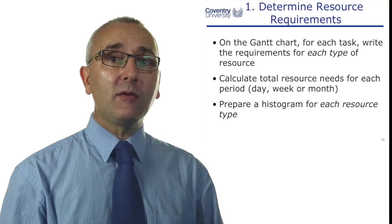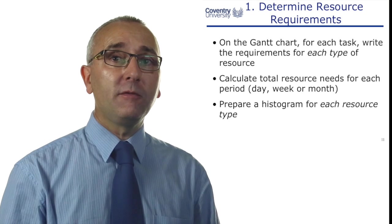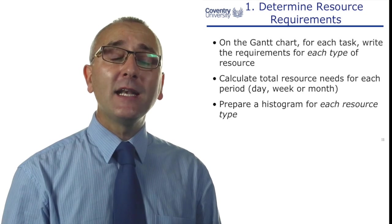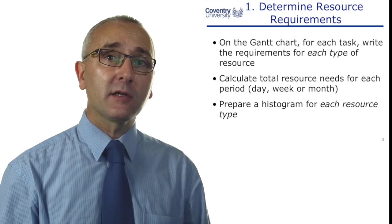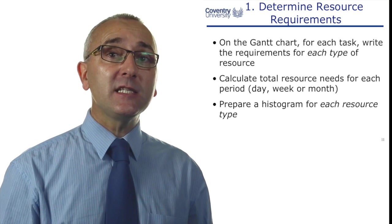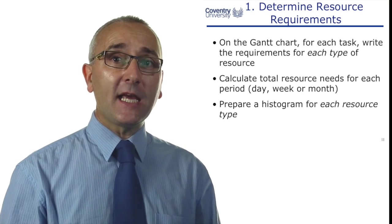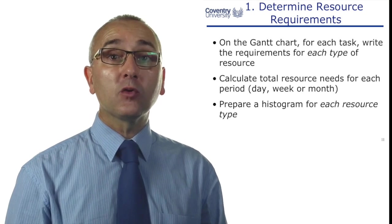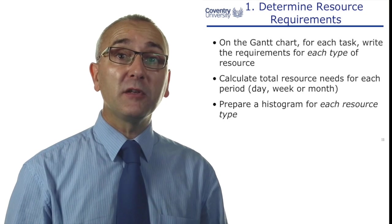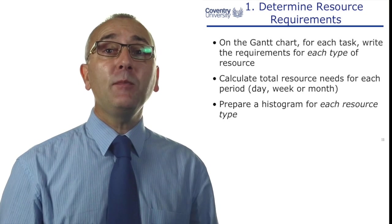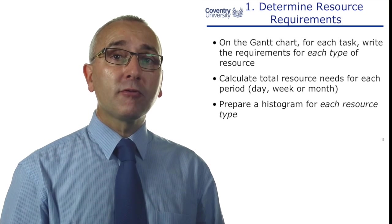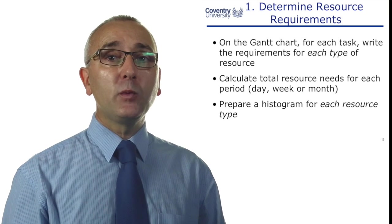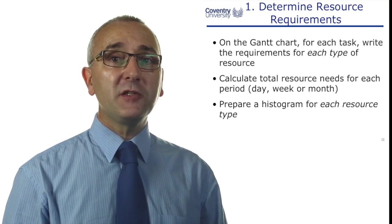On the Gantt chart, we can write down the type of resource that we require and how many we require for each task. Then we can add these up — maybe on a day-to-day basis, a week-to-week basis, or a month-to-month basis.